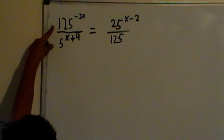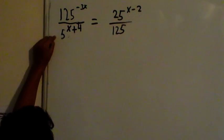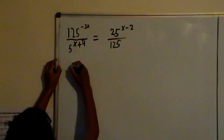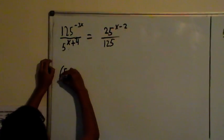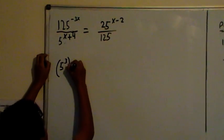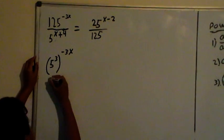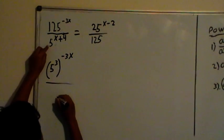I know the base must be 5, because it's a prime number. So, 5 goes into 125, which is 5 power 3 times minus 3x over, that's already a base of 5, so that stays the same.